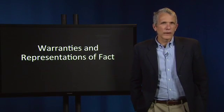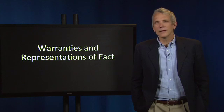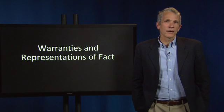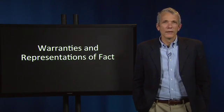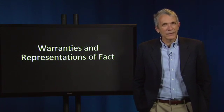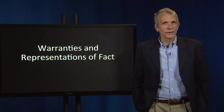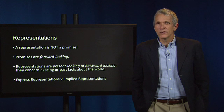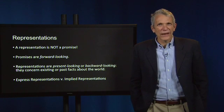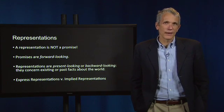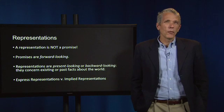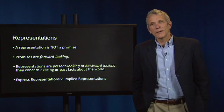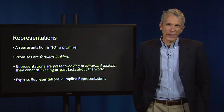We have spoken frequently in this course about promises and the conditions under which promises are and are not enforceable. Indeed, we usually think of contract law as primarily concerning promises. Today we're going to talk about related but slightly different concerns that are also integral to contract law. These are representations and warranties. What's a representation? A representation concerns facts or circumstances related to a proposed transaction. They are not the same as promises. One helpful way to distinguish between the two is to remember that while promises are forward-looking, representations generally involve past or present facts about the world.